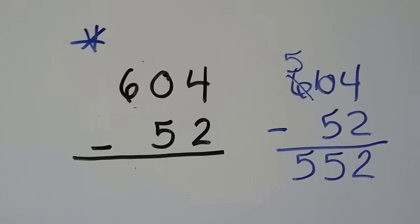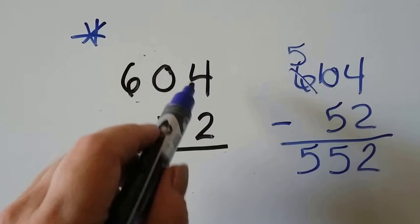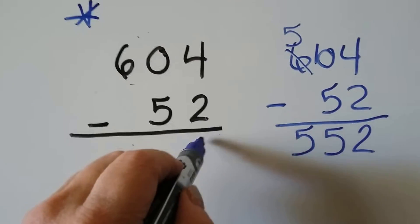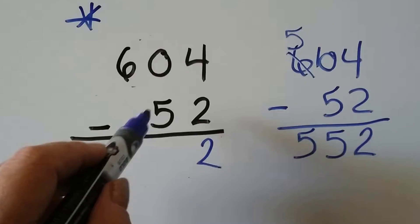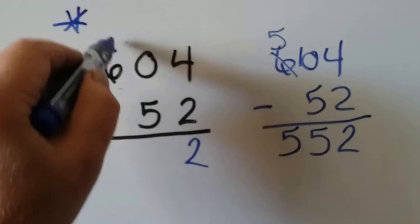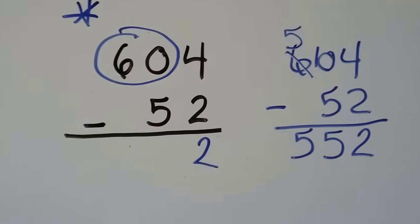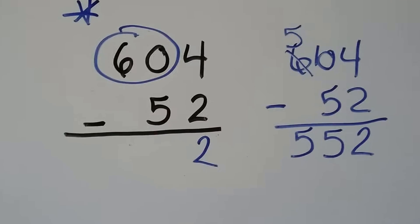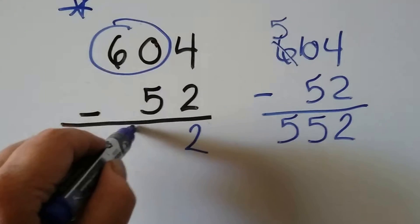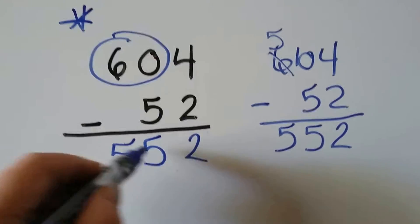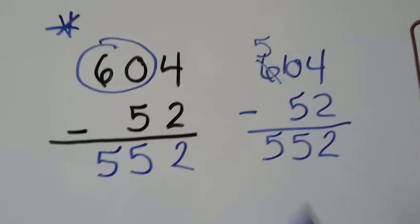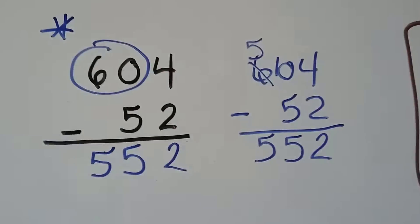Combining place values is a quicker way. We start with the ones place. 4 take away 2 is 2. That's easy. But instead of saying 0 take away 5, we say 60 take away 5. And if you're good with your 5 times table and skip counting by 5, you know that's 55. And that's a lot easier to do mental math than having to regroup and doing it that way.